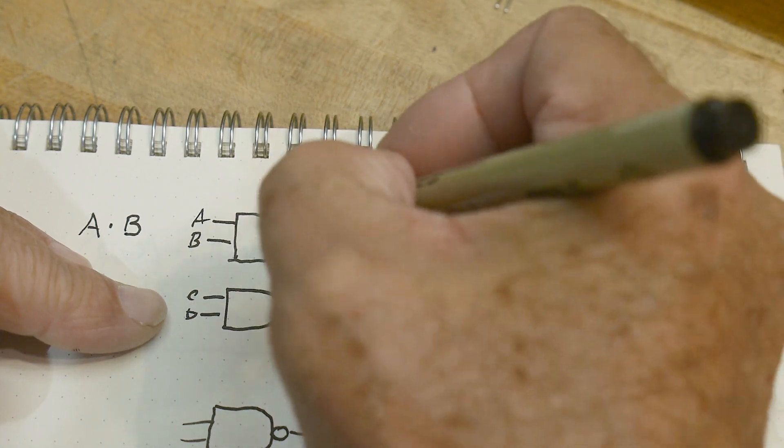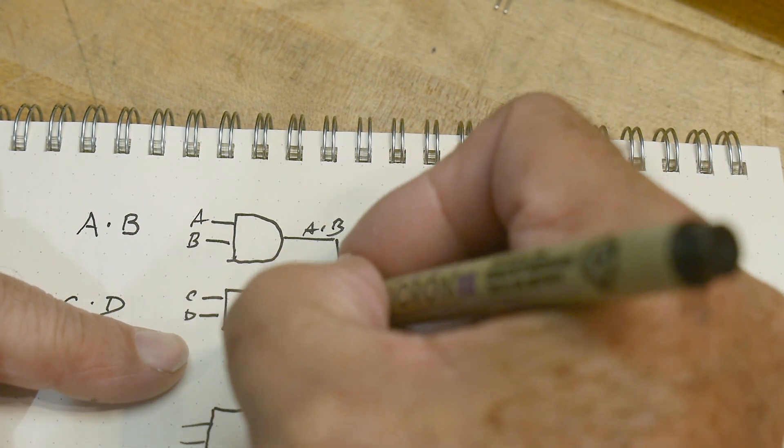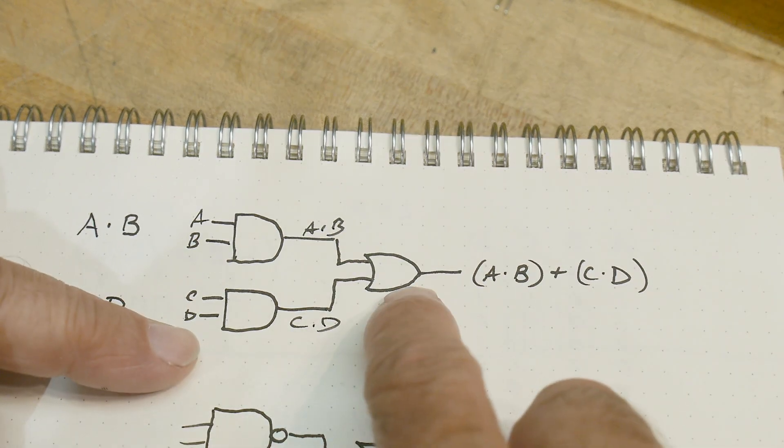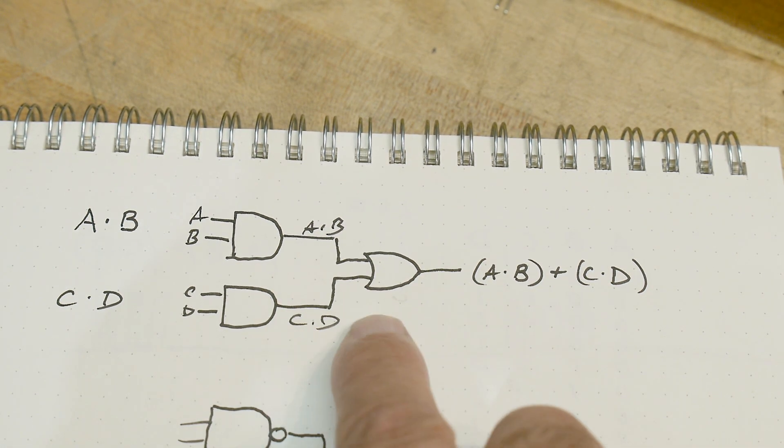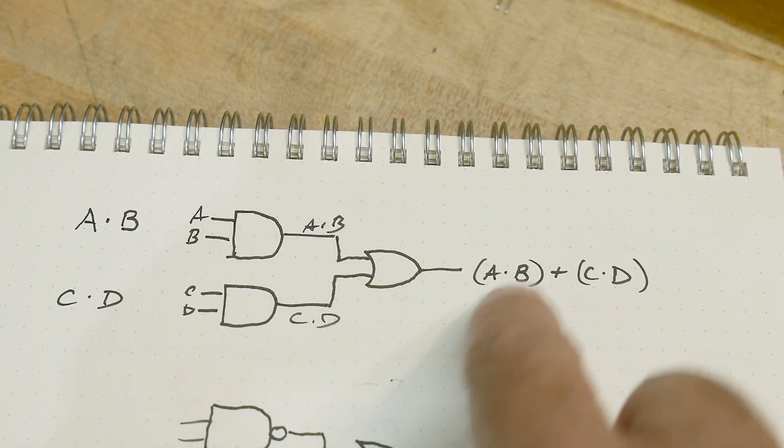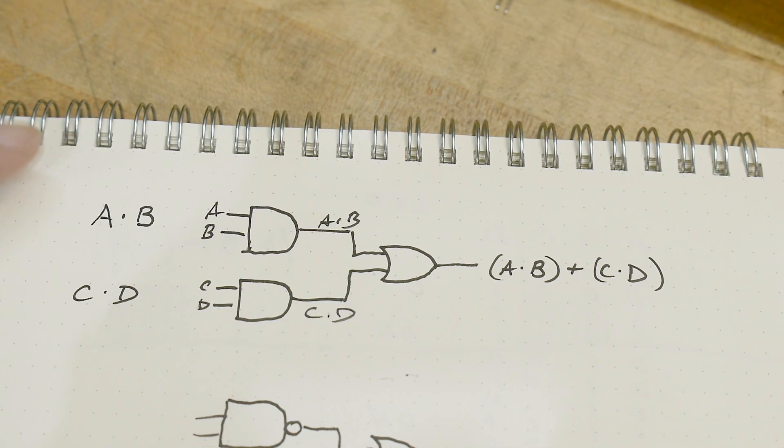And here we have C AND D, so we have C AND D. And then this is an OR gate, so we have A AND B OR C AND D. So this would solve our problem. We could give that back to the boss.